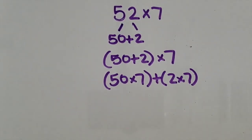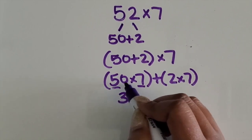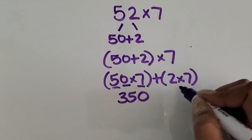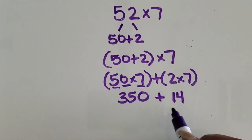Very similar to the area model or partial product strategy. 5 times 7 is 35, 10 times greater than that would be 350. 2 times 7 is 14. Joining those together, I know I have 5 tens here and 1 ten here.